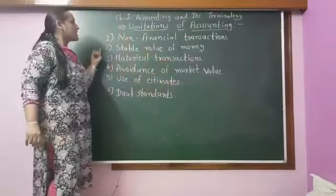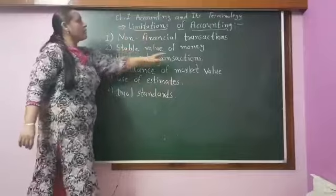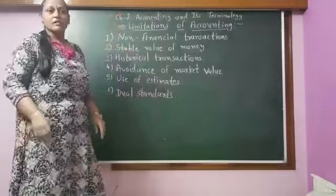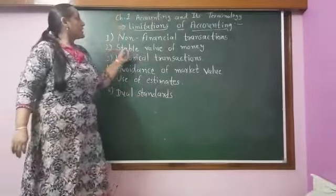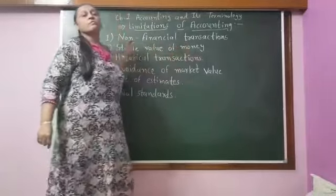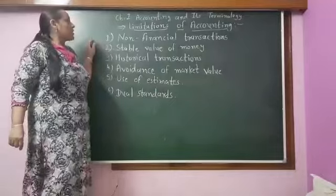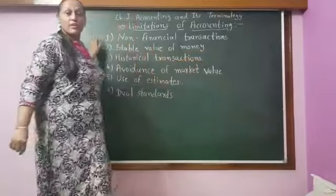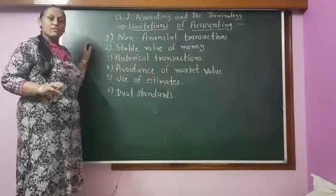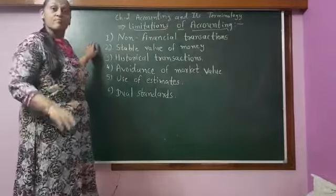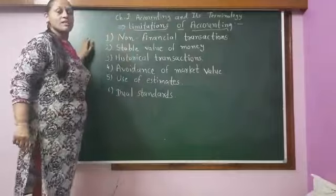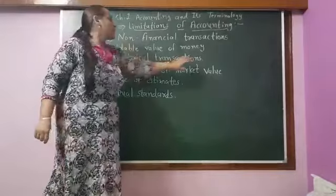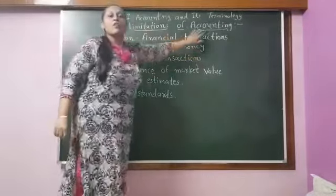The second limitation is that accounting assumes the value of money is stable. But in reality, because of inflation, the value of money keeps changing. For example, if we bought an asset five years ago at Rs. 50,000, we are assuming we can replace that asset now with only Rs. 50,000. But when we go to buy the same asset, we find we are paying more than Rs. 50,000. So that is another limitation of accounting.